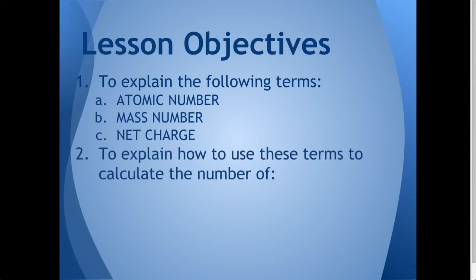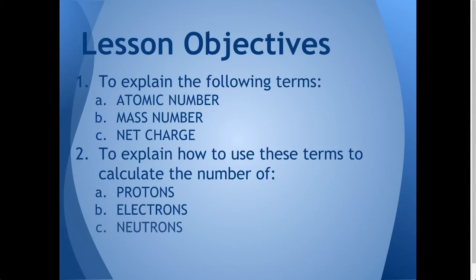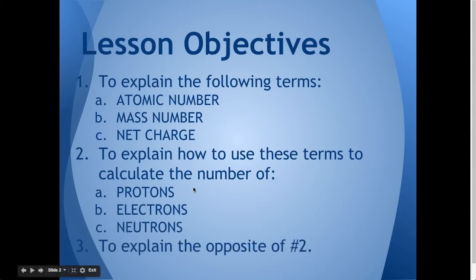Also, to explain how to use these terms to calculate the number of protons, electrons, and neutrons in an atom, and also the opposite of this — where you're going to use the number of protons, electrons, and neutrons to figure out the atomic number, mass number, and net charge.